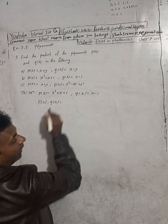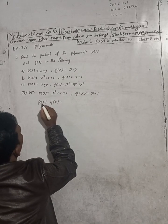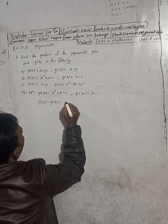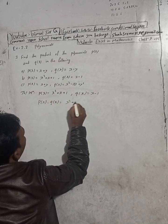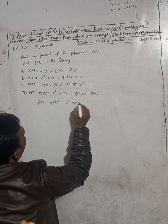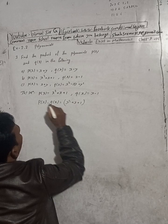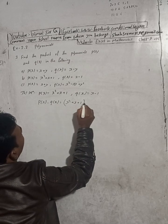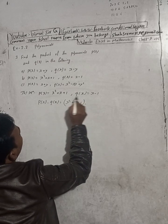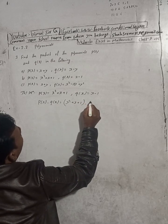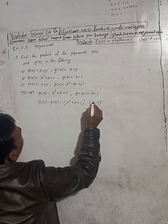P(x) means x squared plus x plus 1 in a bracket, dot to multiply, and Q(x) is equal to x minus 1 in a bracket. So we multiply (x squared plus x plus 1) by (x minus 1).